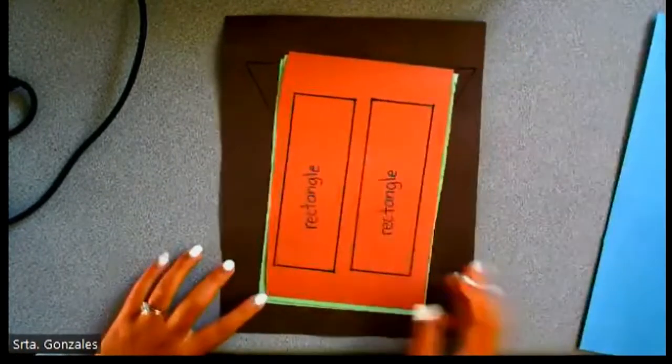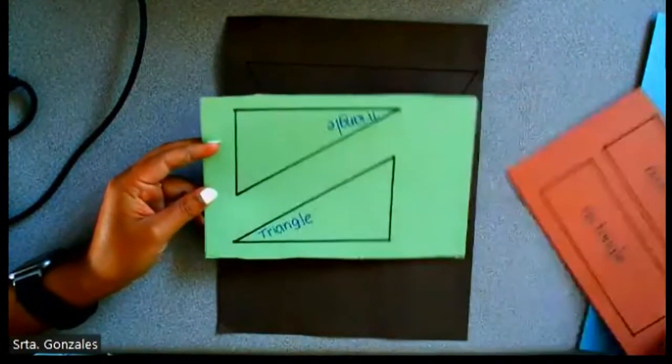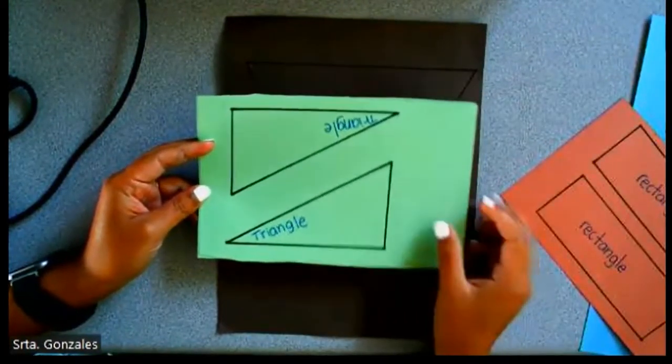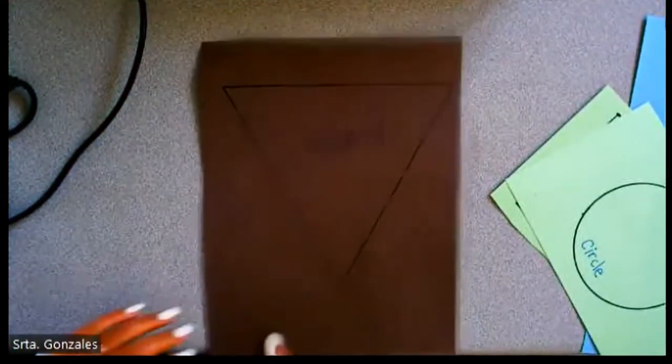You will need two rectangles, preferably light brown, two green triangles, one green circle, and one large triangle.